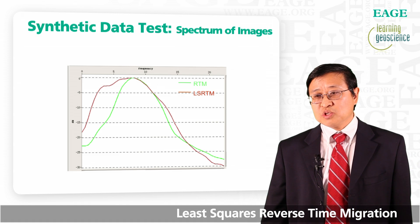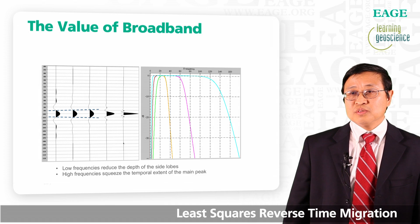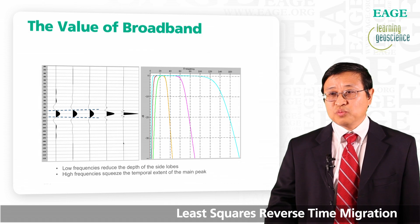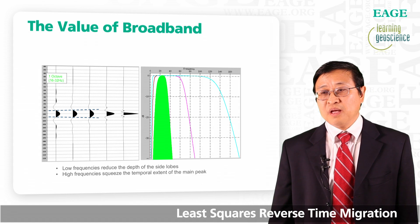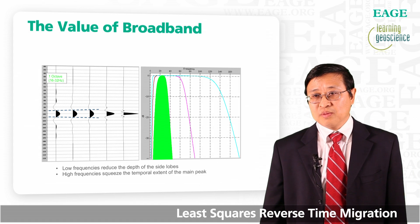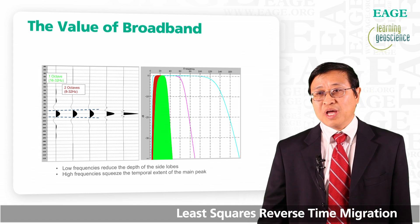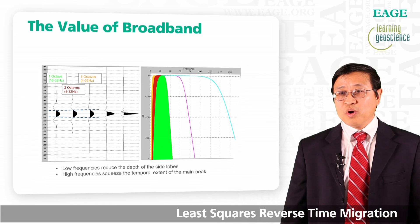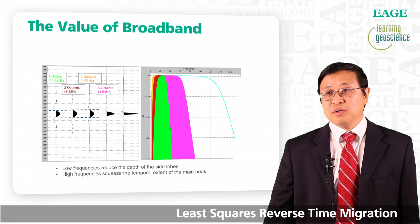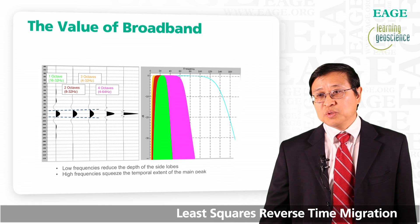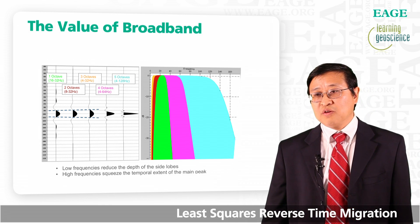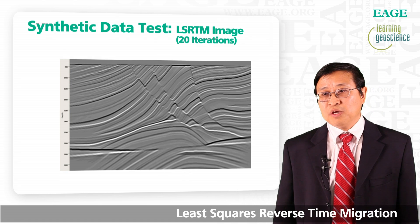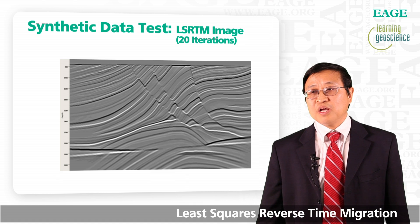Now let's look at why low frequency is so important. On the left is a set of wavelets, and on the right are the corresponding spectra. The first wavelet is narrow band, 16 to 30 Hz — the side lobe is about the same magnitude as the main peak. If we expand the low frequency from 16 to 8 Hz, the side lobe is reduced to about half. Further increasing low frequency to 4 Hz, the side lobe becomes one third. High frequency — increasing from 32 to 64 to 128 Hz — squeezes the wavelet, providing vertical resolution. Comparing RTM image with least squares RTM image, you can see least squares RTM gives you a broadband image.